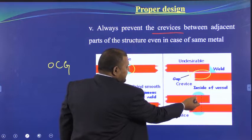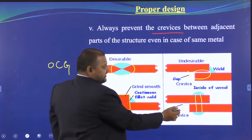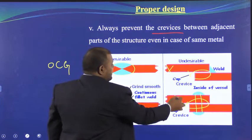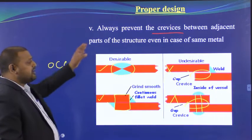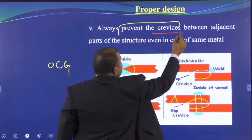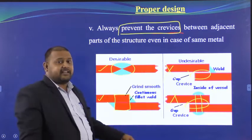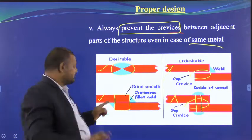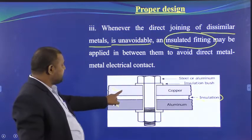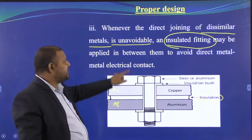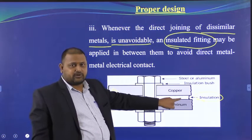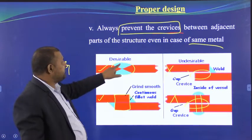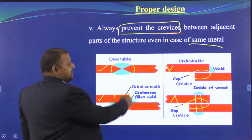Any joint welded only on one side leaves a gap where moisture or dirt may enter — this causes differential oxygen concentration and accelerates corrosion. Even for the same metal, you must ensure no crevices or gaps exist between adjacent parts. This is all about proper design.